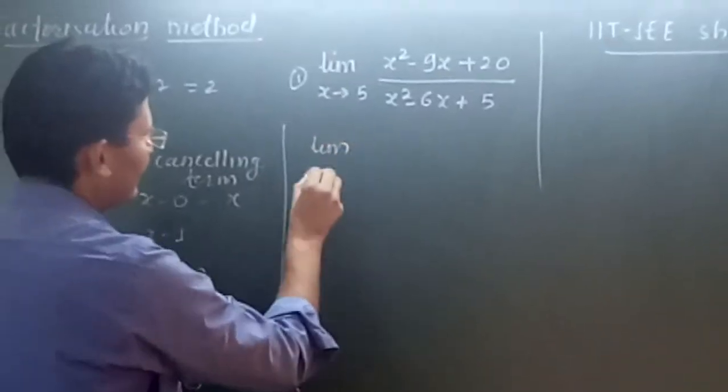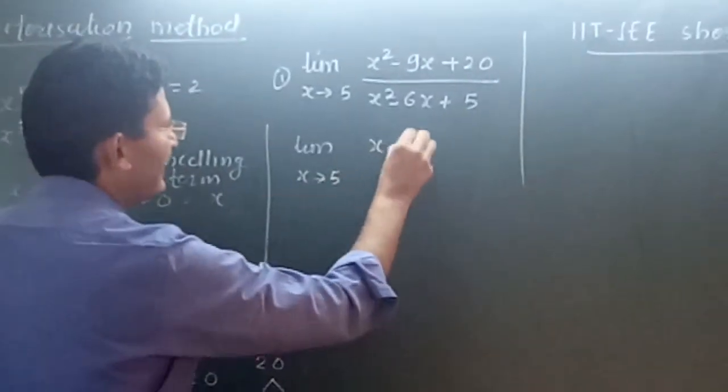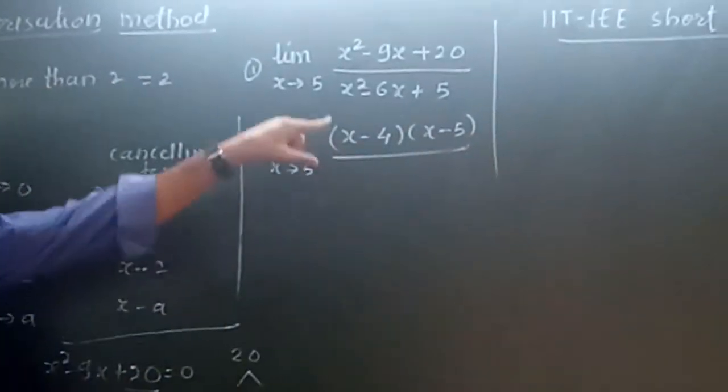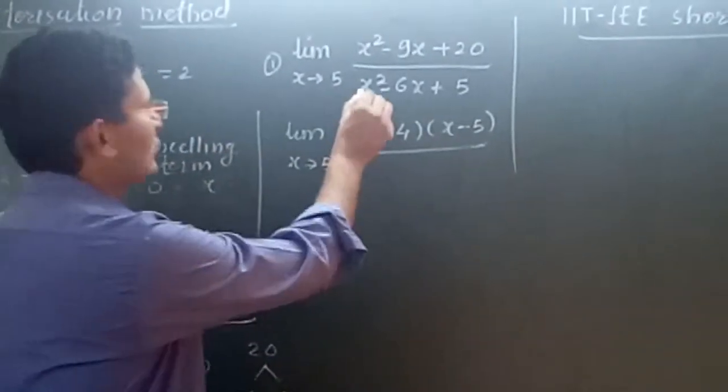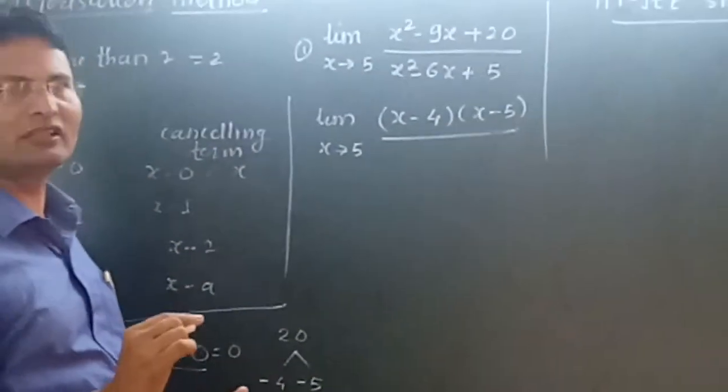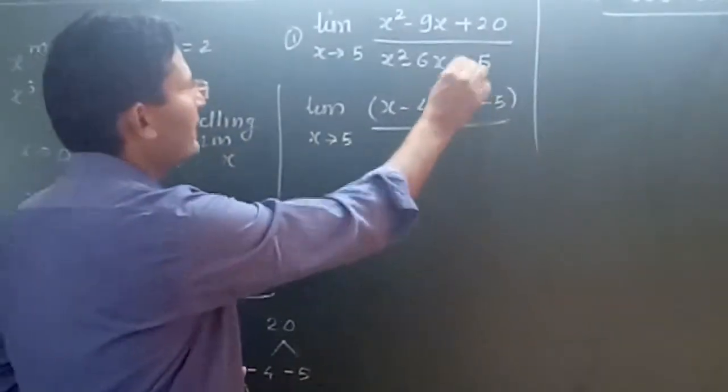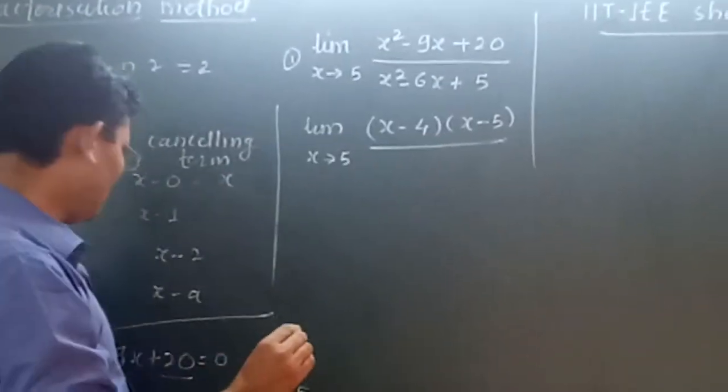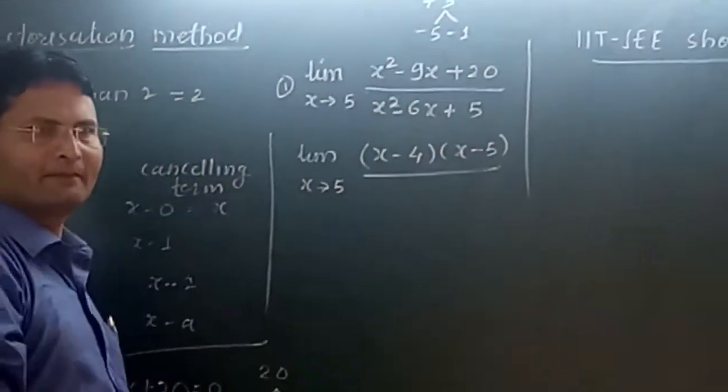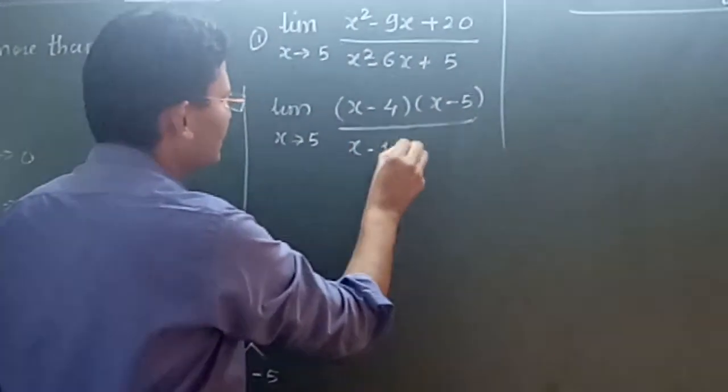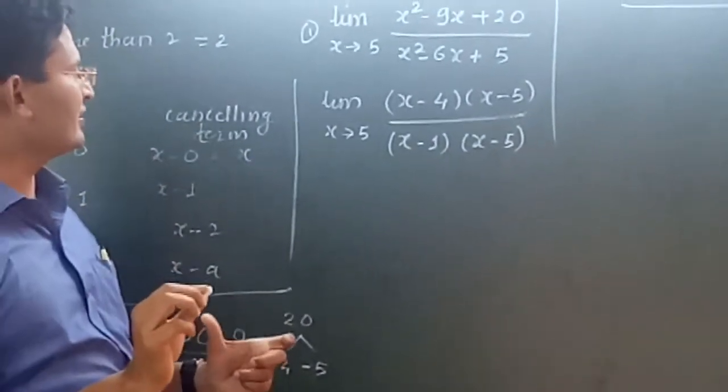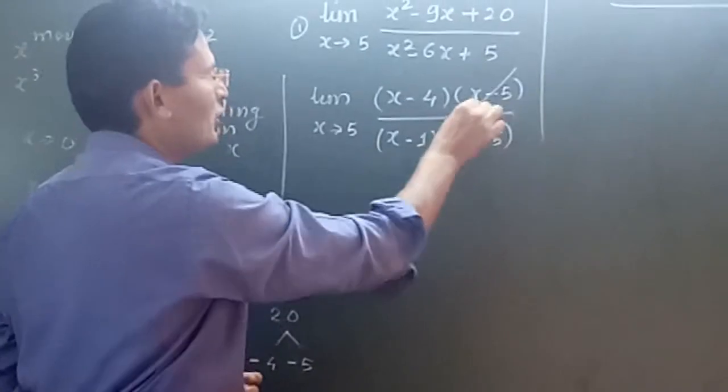So the next term would be limit x tends to 5, x minus 4 and x minus 5 upon... If you look at the denominator, we can see x square minus 6x plus 5. Again, the same thing, the cancellation term is x minus 5. What would be the factors of plus 5? The factors would be minus 5 minus 1. So the factors would be x minus 1 and x minus 5. The canceling term x minus 5 got canceled.